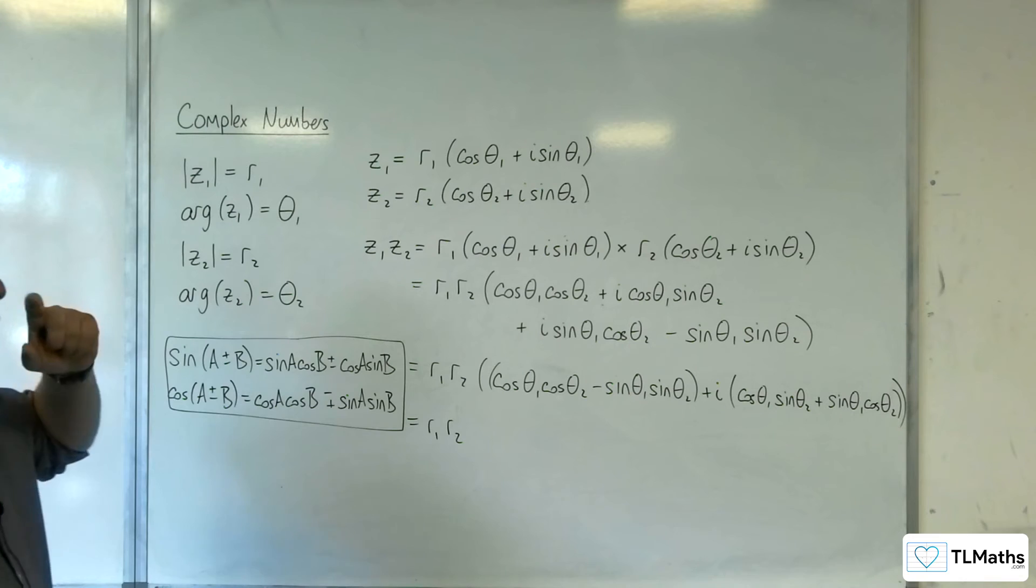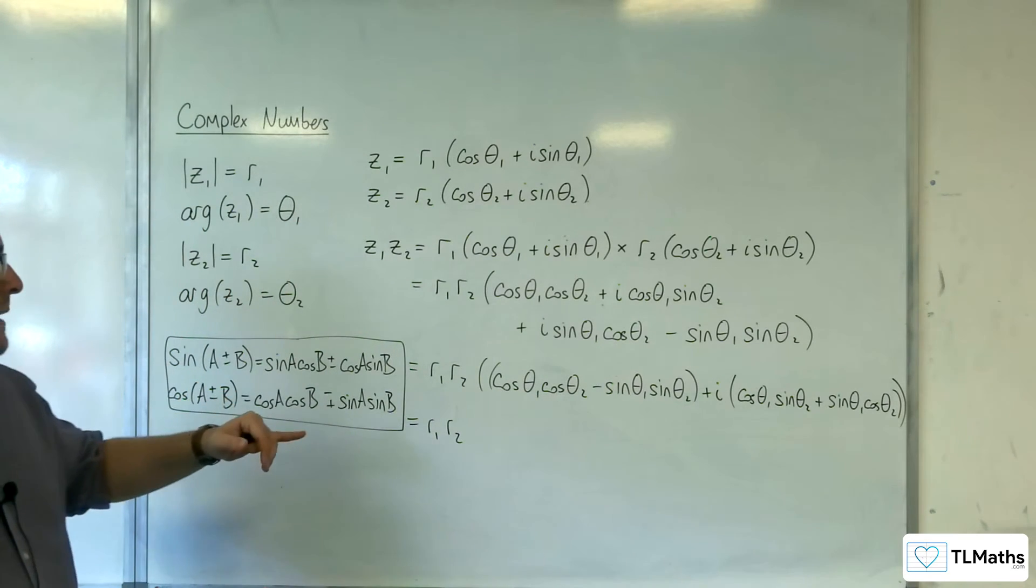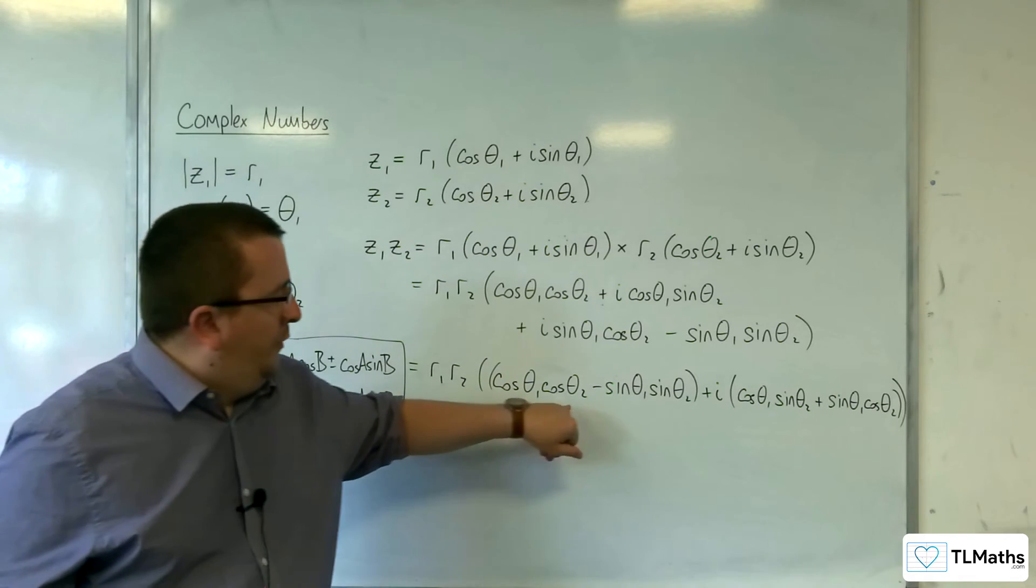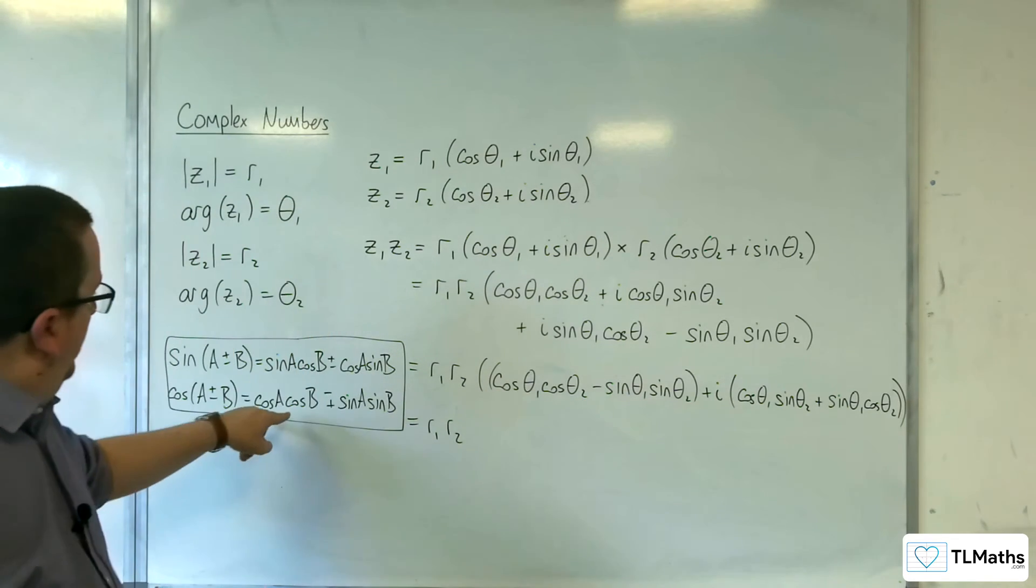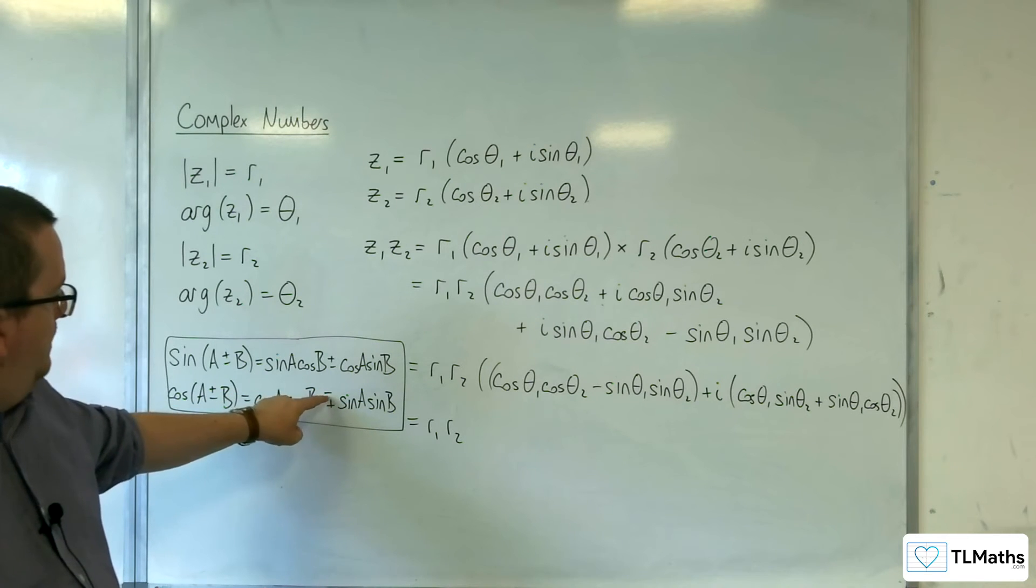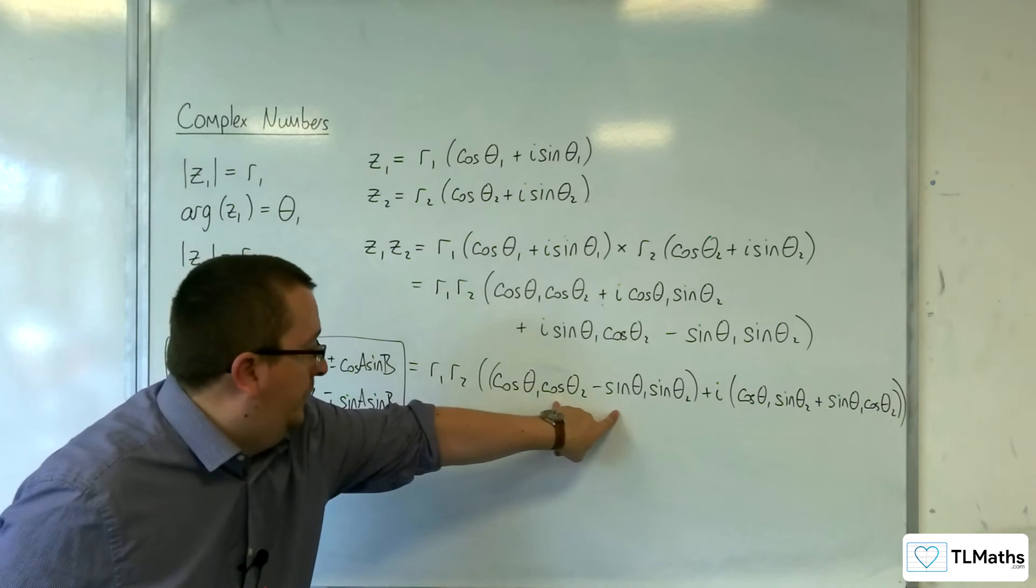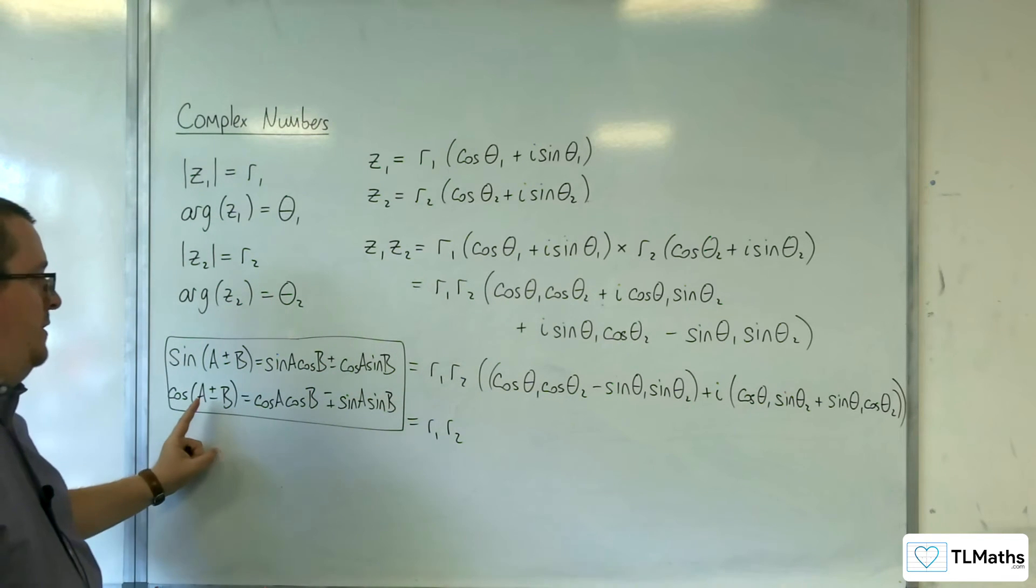Now what you've got here is that the theta1 and the theta2 are the A and the B. Here you've got cosine cosine take away sine sine, so that refers to this one here. Now if that's a minus in there, then that's got to be a plus there, so you can replace this with cosine of theta1 plus theta2.